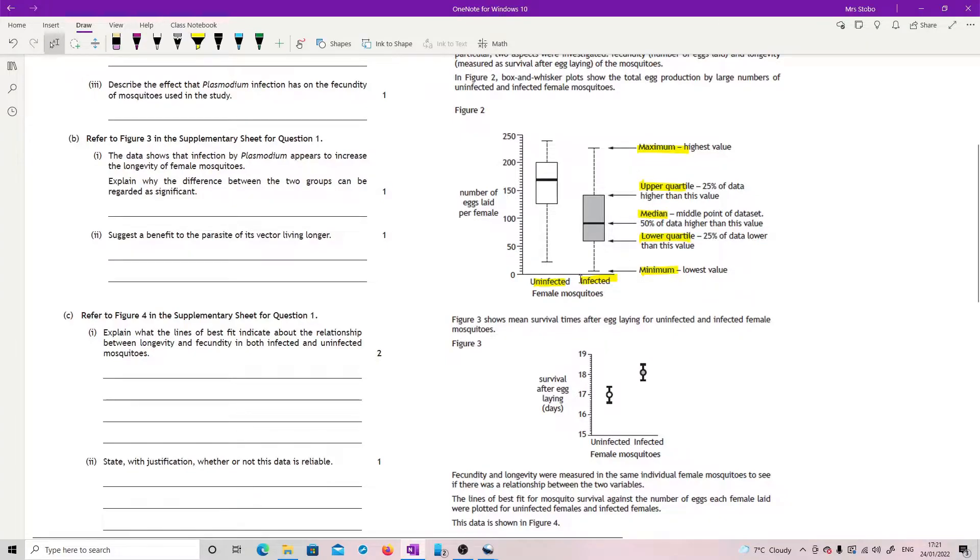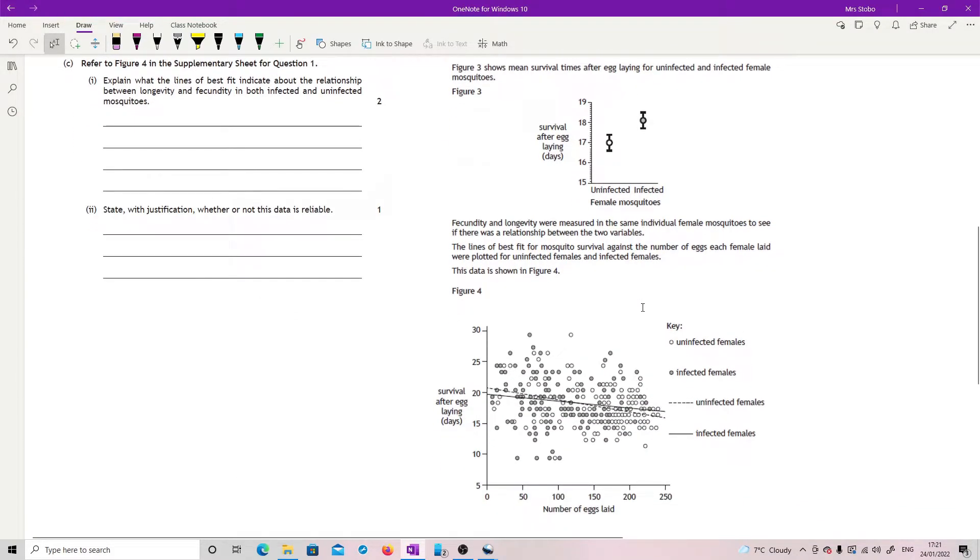They're giving you basically quite a lot of information about what that means. Figure three shows mean survival times after egg laying for infected and uninfected females. So we've got a single data point in terms of the survival and we've got our range or error in that one.